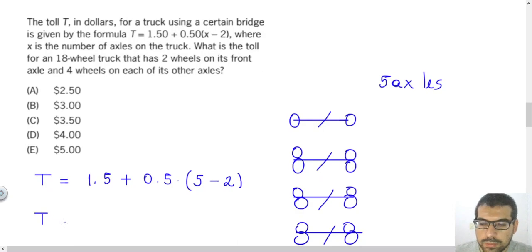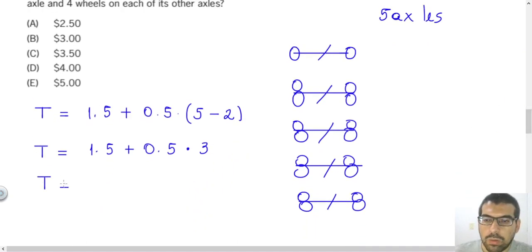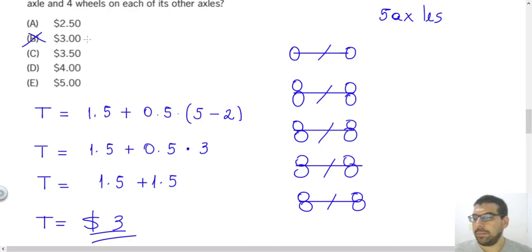And then the toll will be 1.5 plus, remember, you need to solve the parenthesis firstly in a mathematical expression. So I will solve the parenthesis firstly, and 5 minus 2 will be 3. Then the toll will be 1.5 plus 0.5 times 3 will be 1.5. And finally, the value of the toll will be 1.5 plus 1.5, it will be $3. And the answer will be letter B.